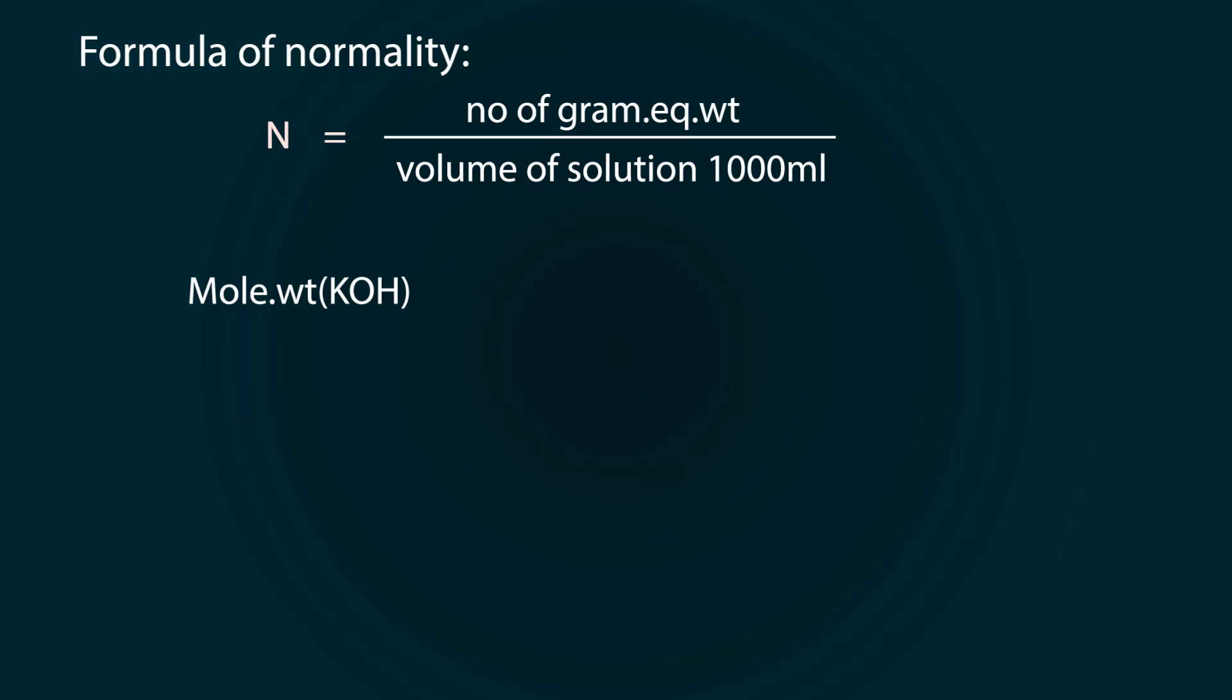So molecular weight will be equal to 39.1 for potassium plus 16.0 for oxygen plus 1.01 for hydrogen. So molecular weight is 56.11 grams per mole.